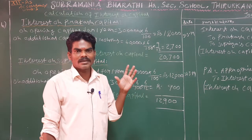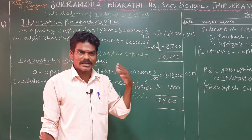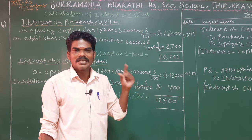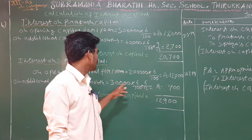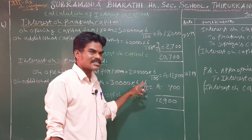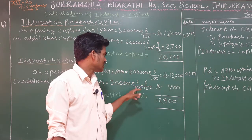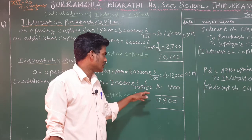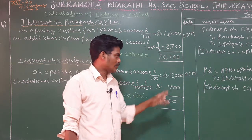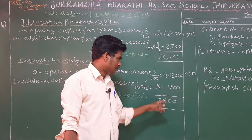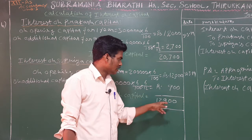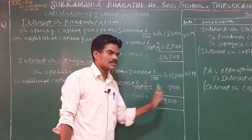The additional capital is for 6 months. So: 30,000 × 6/100 × 6/12 = Rs. 900 interest. The total interest on Supriya's capital is 12,000 + 900 = Rs. 12,900.